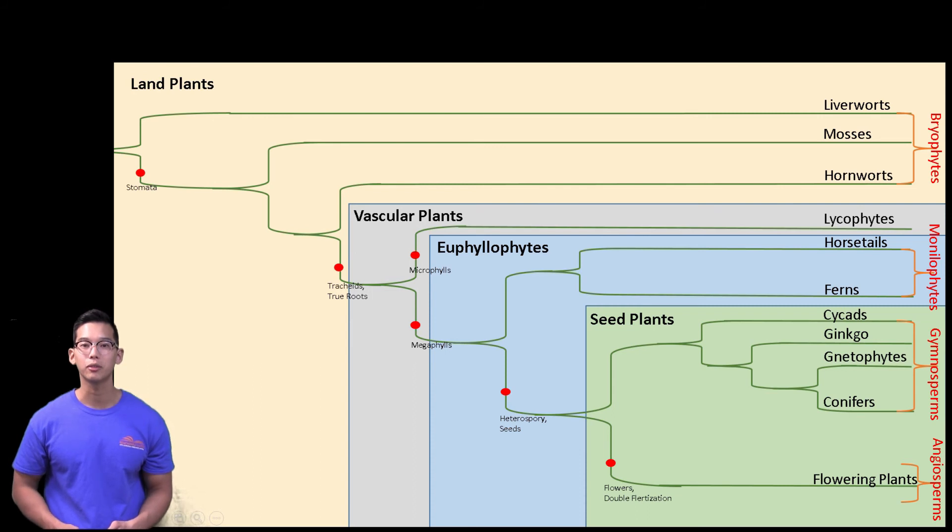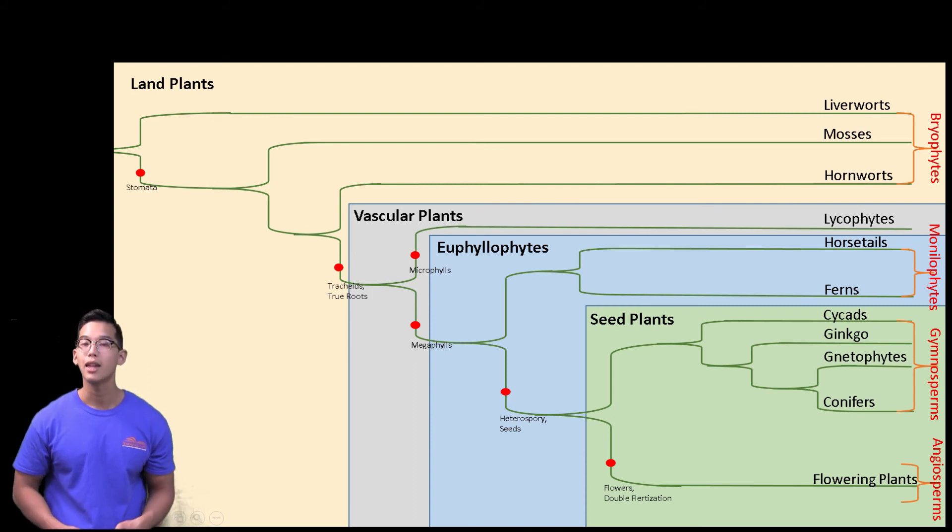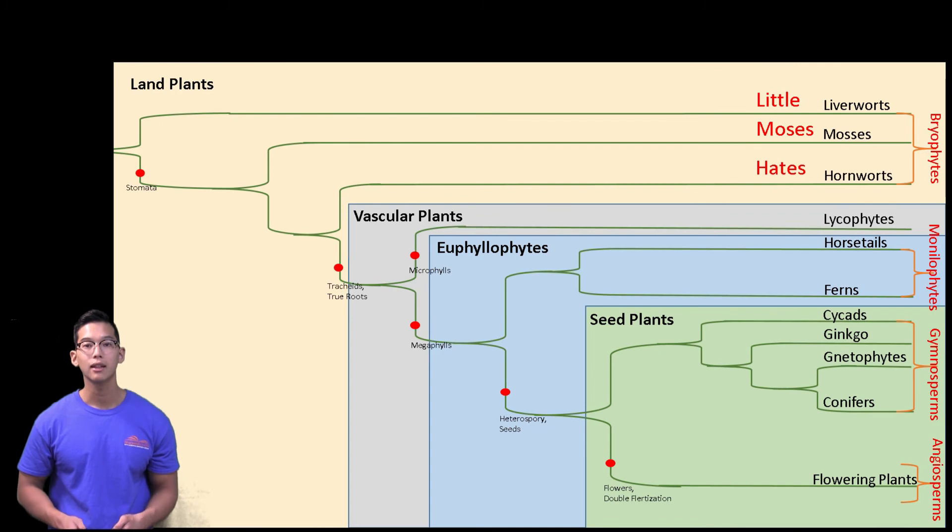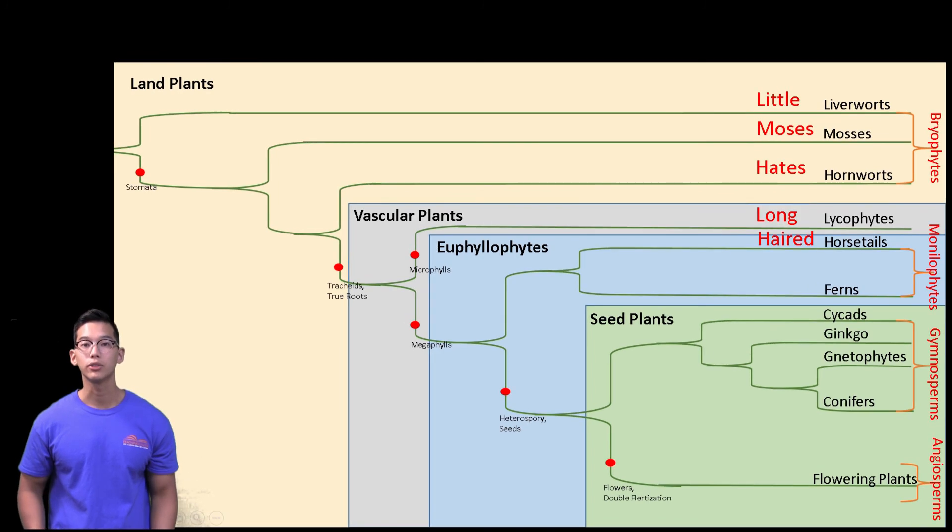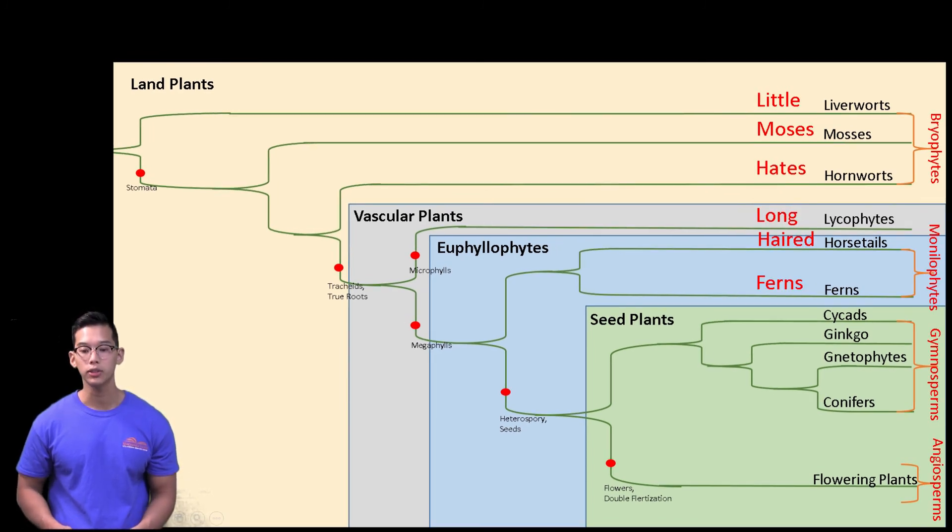Little for liverworts, Moses for mosses, hates for hornworts, long for lycophytes, haired for horsetails, and ferns for ferns.